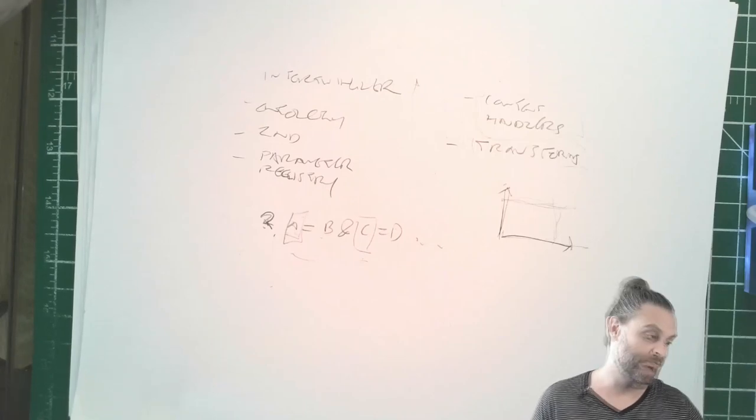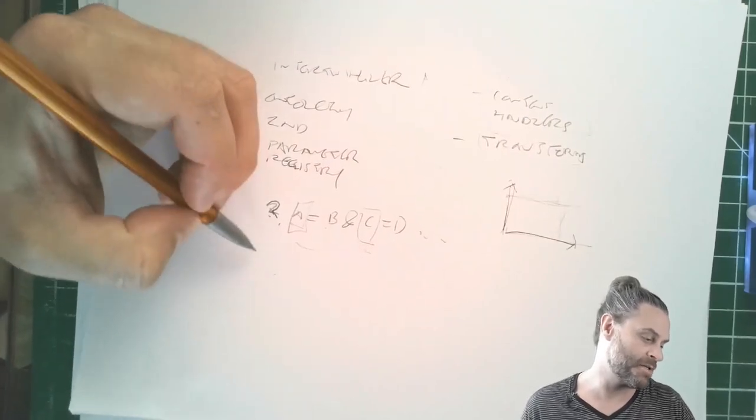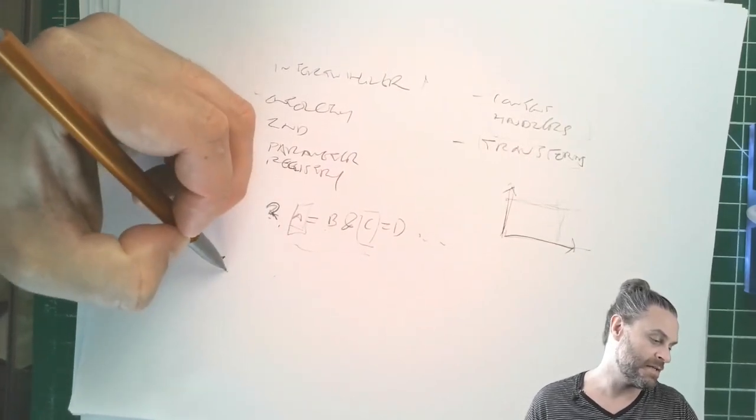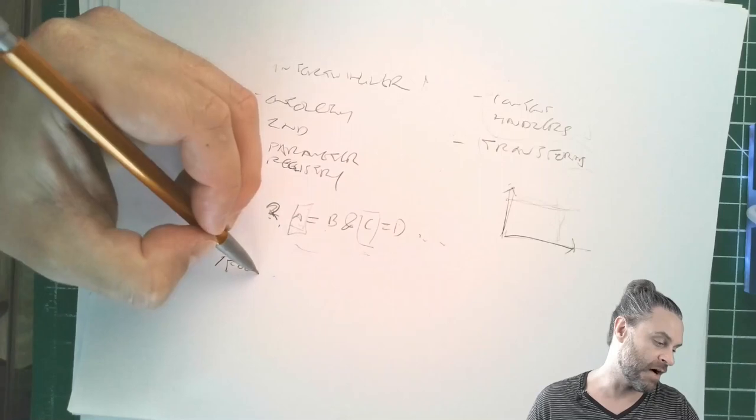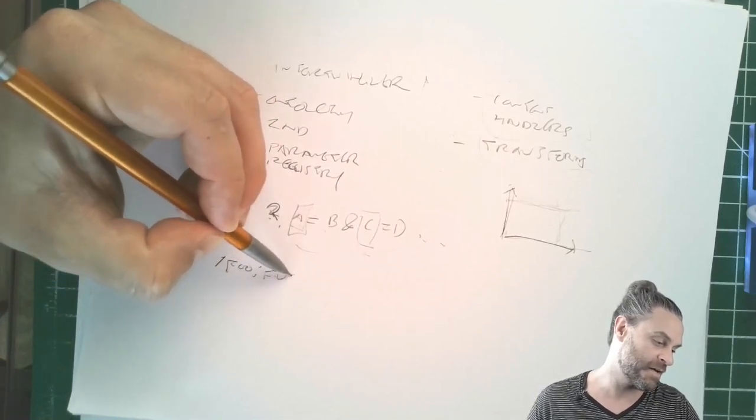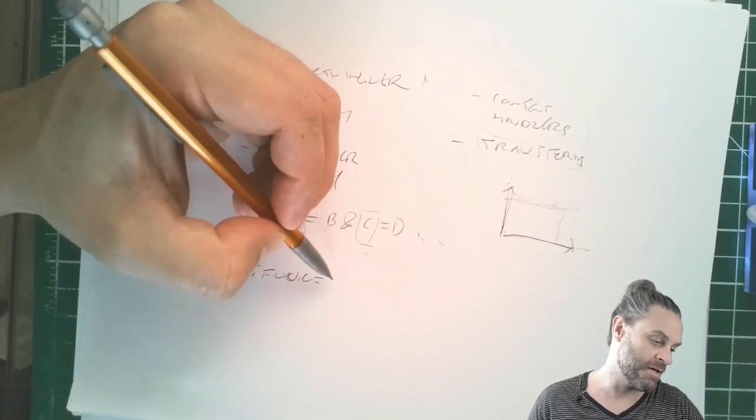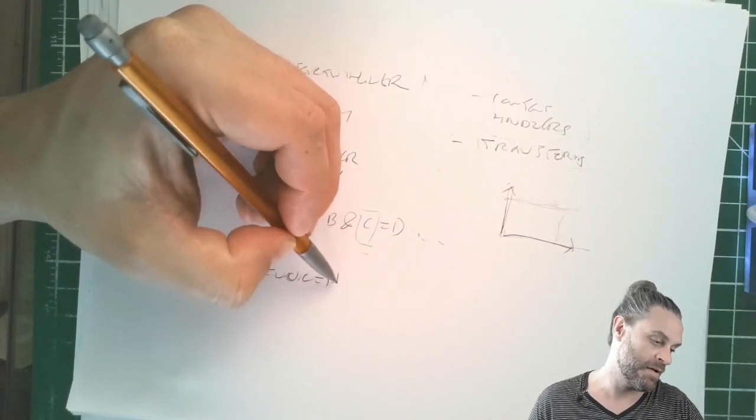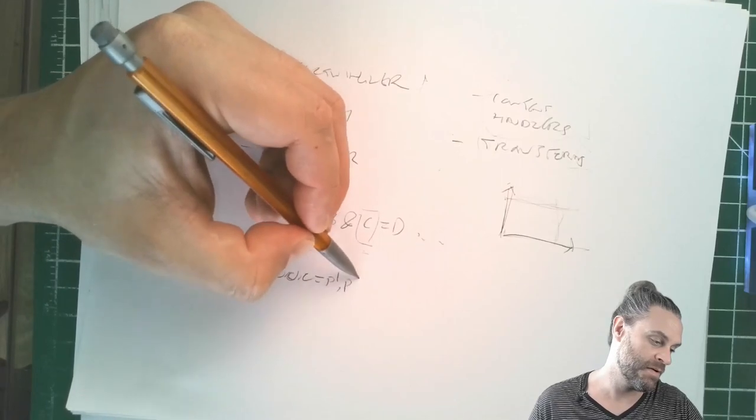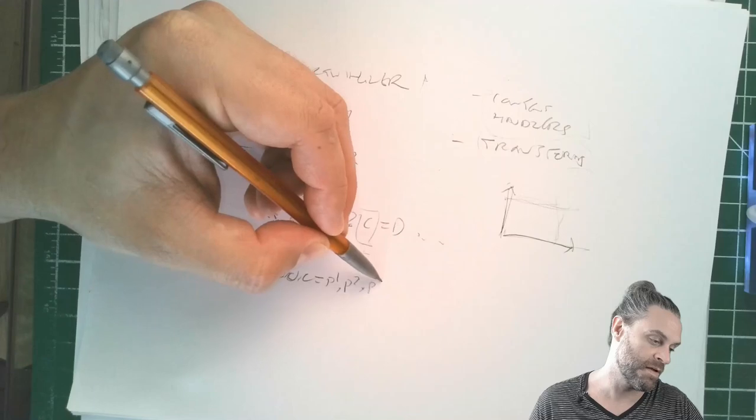So the thing about the transforms is that you handle those with path parameters. So you see, like, slash foo, whatever, and then you see a semicolon, and then you'll see func equals p1, p2, those are commas, p3, whatever.